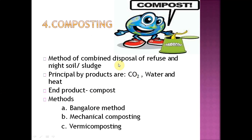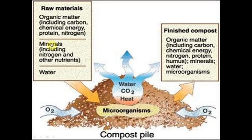Composting involves combining refuse with sludge in a particular manner to produce proper compost. There are three methods: Bangalore method, mechanical composting, and vermicomposting. The raw material is organic matter — we cannot add plastics and other non-organic materials. Unlike sanitary landfill or dumping where no segregation is required, in composting proper segregation is essential. Only organic matter should be included; other things must be removed.